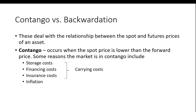Contango and backwardation deal with the relationship between the spot and futures prices of an asset. Contango occurs when the spot price is lower than the forward price or futures price. Some reasons the market is in contango include storage costs, financing costs, insurance costs, and even inflation. The first three are what we refer to as carrying costs.